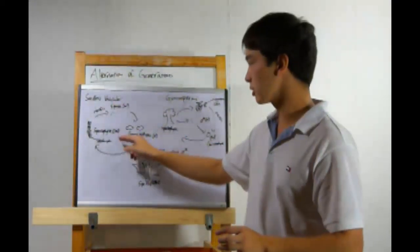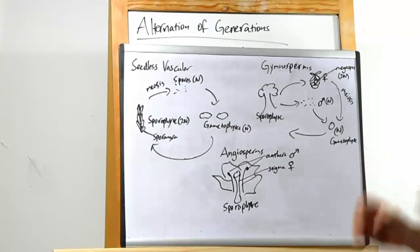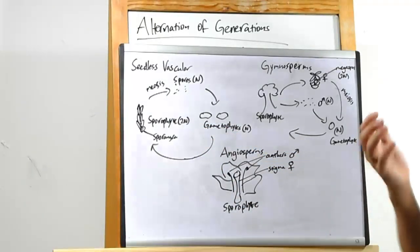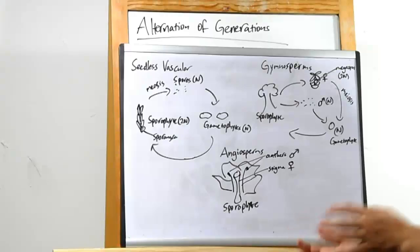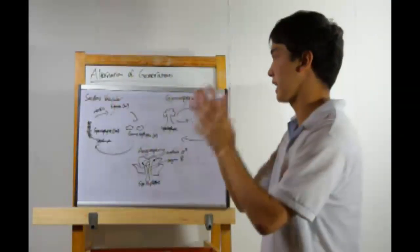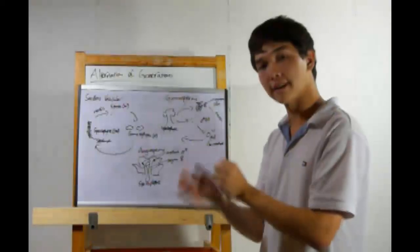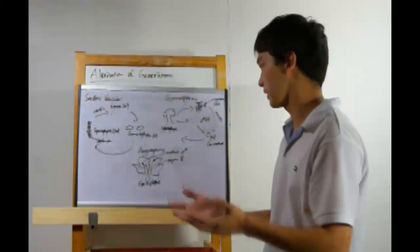So starting with the sporophyte generation this time, diploid, it has structure known as sporangia towards the lower end of it. These will undergo meiosis and produce haploid spores, which, when they find fertile ground, will turn into gametophytes.